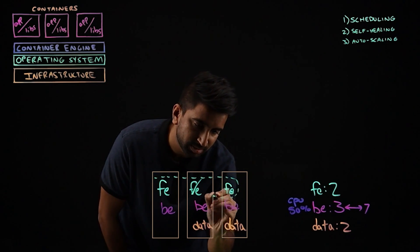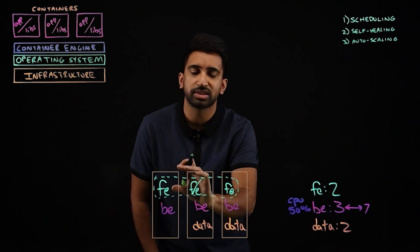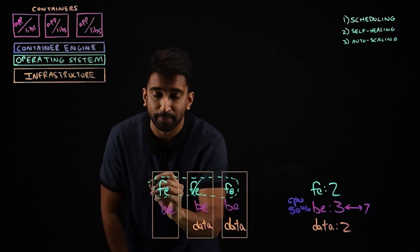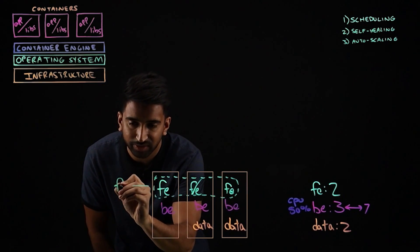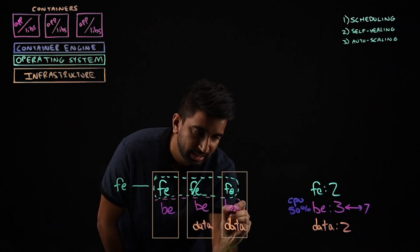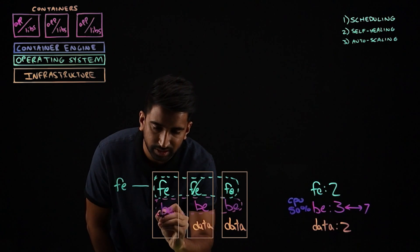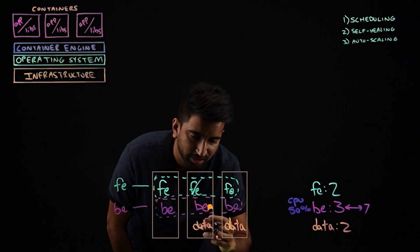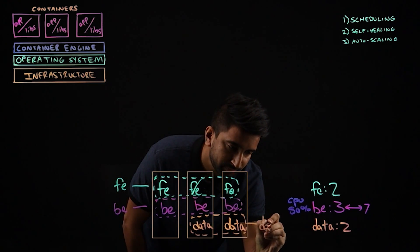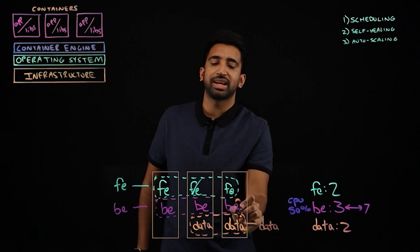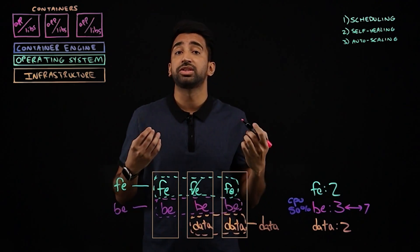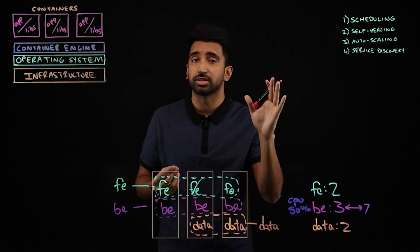Kubernetes abstracts this into something called a service. Essentially, what you can do is give it a selector and say, look, pick all the pods with the name EFI. And then we're going to call the service very simply. Let's just call it FE. We'll do the same thing for the back end. And so in our architecture, let's say that the back end needs to talk to the data tier.